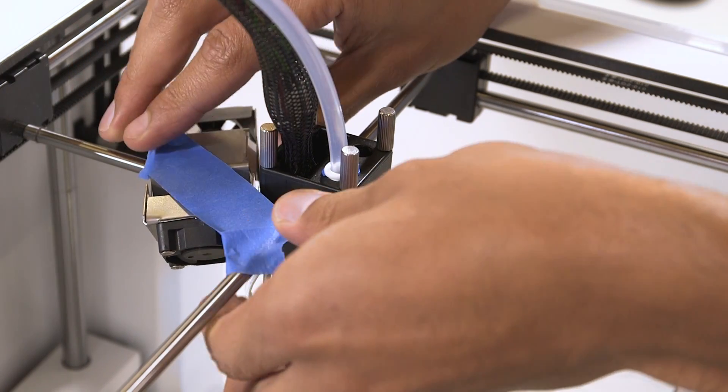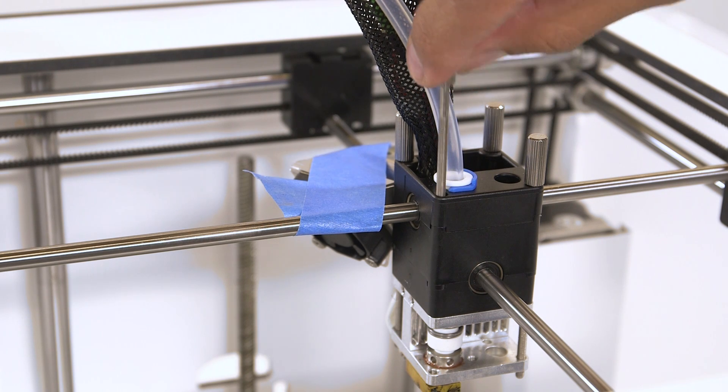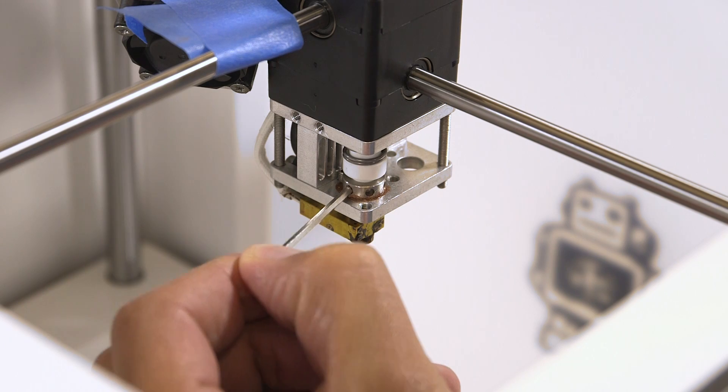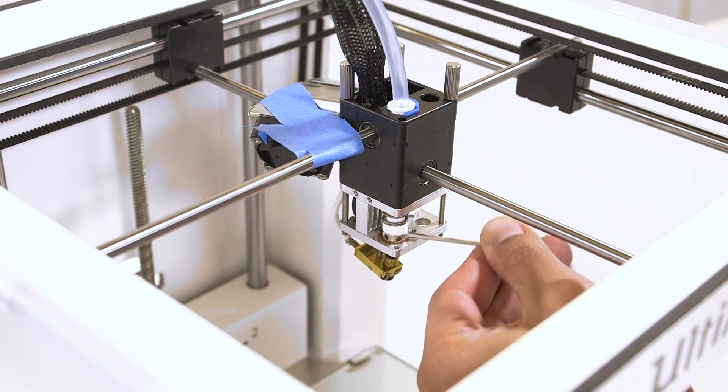Loosen the front left thumb screw to give yourself more room to reach the hotend isolator, which is the ring with holes in it. Insert a hex key into one of the holes and turn the isolator counter-clockwise, until it's loose enough and the nozzle drops down.